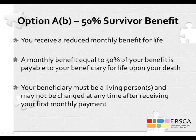Option AB is very similar to Option AA. The difference is that AB pays half as much to the beneficiary — instead of 100% of the retiree's monthly check, the beneficiary receives only 50% for life. Since AB pays half as much as AA, the reduction to the retiree's monthly benefit is not as great as under Option AA.